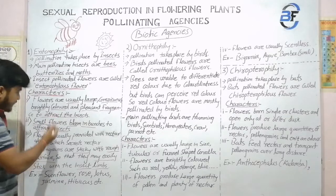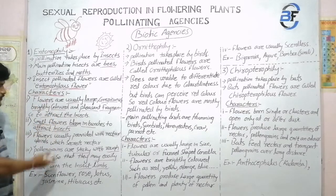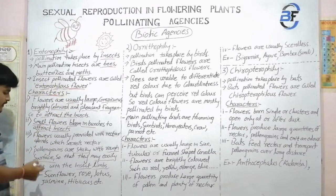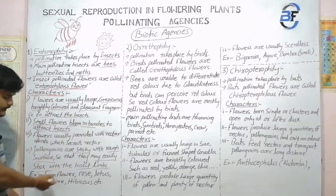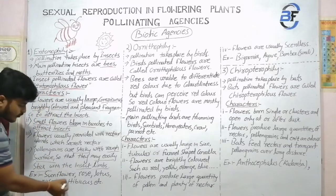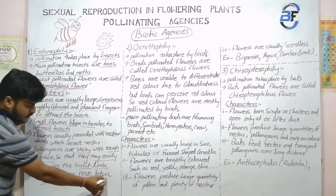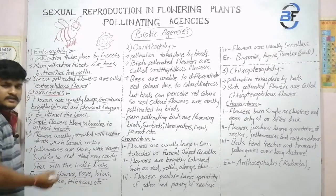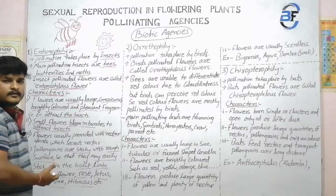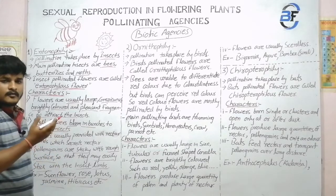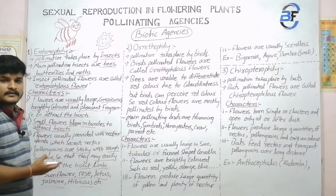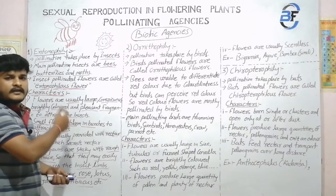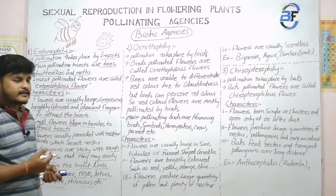So these are some of the characteristics of your Entomophilous flowers. The flowers involved in Entomophily include mostly sunflower, rose, lotus, jasmine, hibiscus — these are some good examples. You may consider hibiscus, jasmine, sunflower — in these cases, mostly insect pollination takes place.